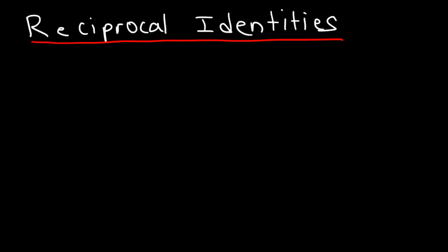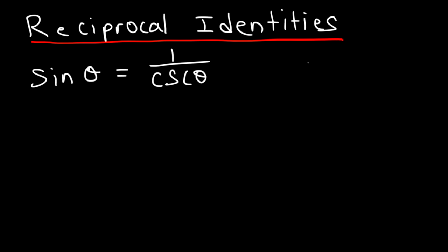So now how does this relate to trig? What is the reciprocal of sine? The reciprocal of sine theta is cosecant. Sine is 1 divided by cosecant, and cosecant is 1 over sine.